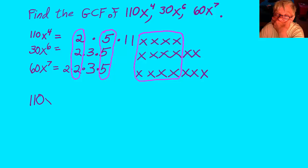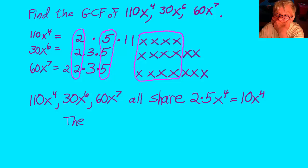That is our GCF. 110 x to the fourth, 30 x to the sixth, and 60 x to the seventh all share 2 times 5 times x to the fourth, which is 10 x to the fourth. The GCF of those three expressions is 10 x to the fourth.